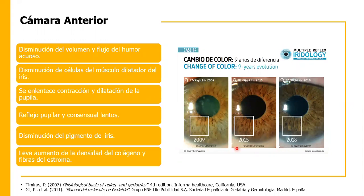Aquí podemos ver cambios en la coloración del iris desde el 2009 hasta el 2018 en un paciente que tuvo este cambio por colirios con esteroides. En pacientes geriátricos, que suelen estar siempre con colirios, no es incomún que pasen estos cambios. Ya sabemos que los esteroides tienen muchas consecuencias en los ojos: pueden traer cataratas o llevar a un cuadro de glaucoma de ángulo cerrado. También va a haber leve aumento de la densidad del colágeno y fibras del estroma.